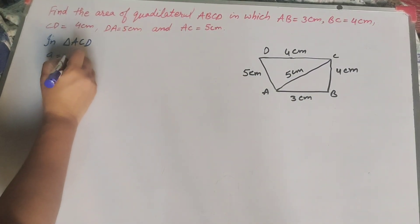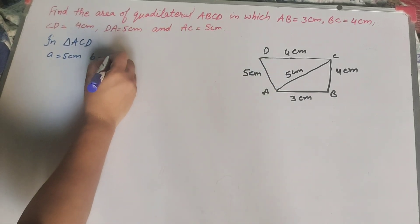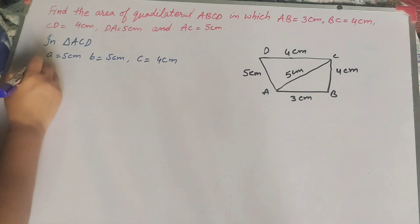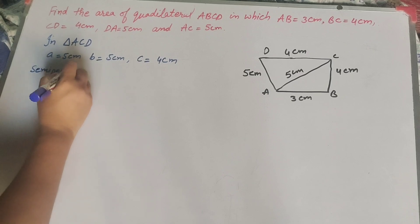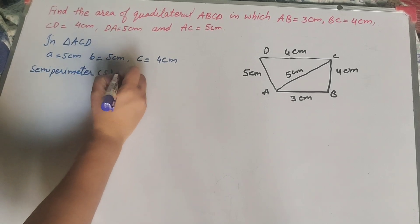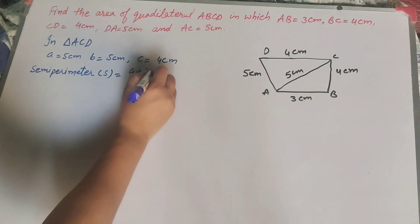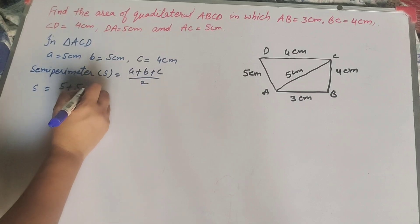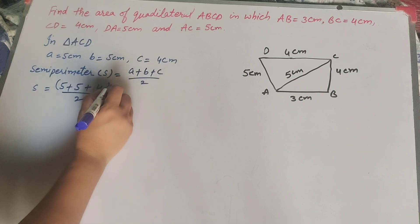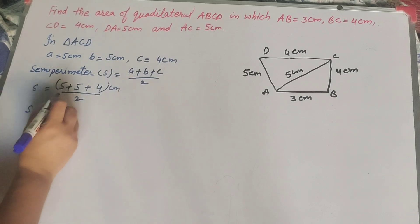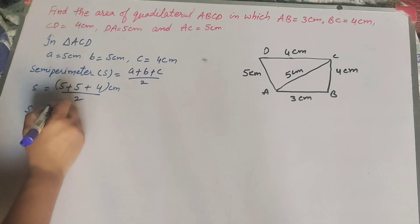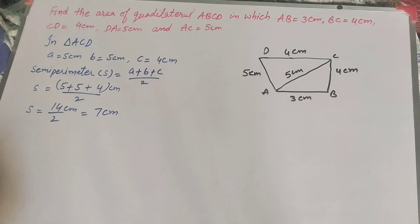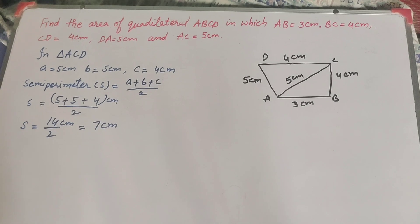In triangle ACD, side a equals 5 cm, side b equals 5 cm, and side c equals 4 cm. First we find the semi-perimeter. Semi-perimeter s equals the sum of sides divided by two: s = (5 + 5 + 4) / 2 = 14 / 2 = 7 cm.